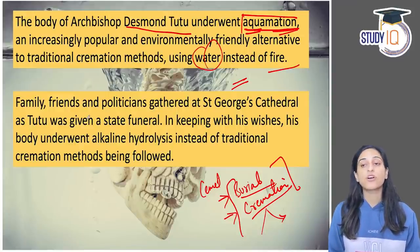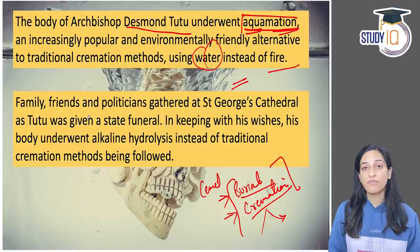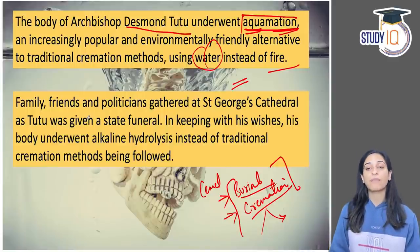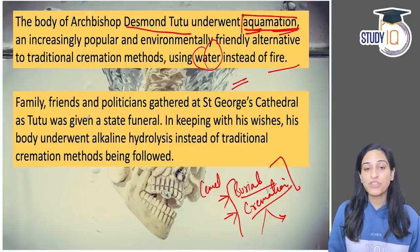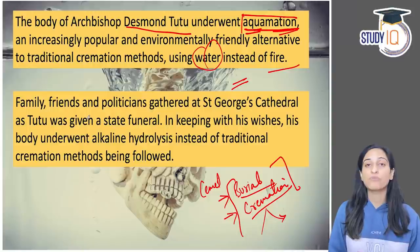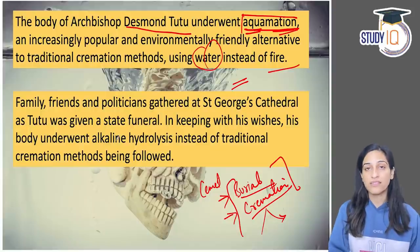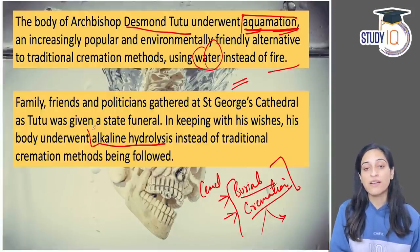At St. George's Cathedral, the final journey and state funeral of the archbishop took place. His wish was that his funeral be cheap and environment-friendly. His body was placed in a cheap wooden box according to his wish, and later aquamation using the alkaline hydrolysis method was performed.